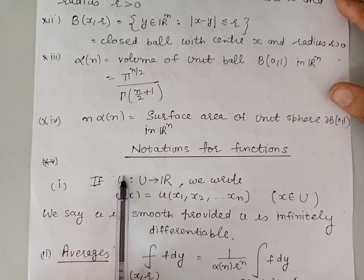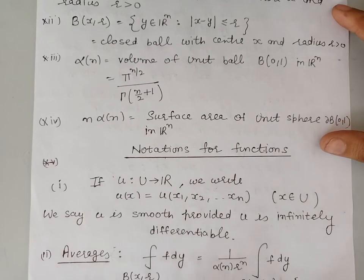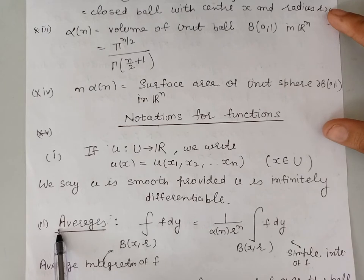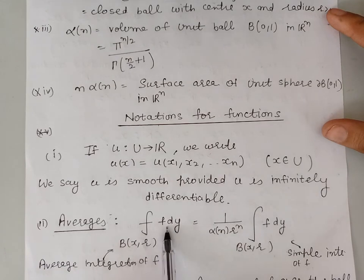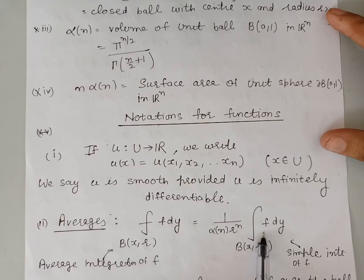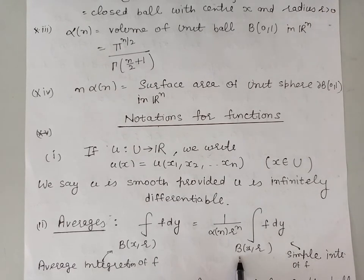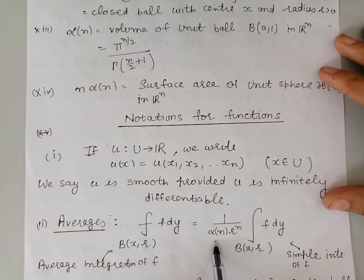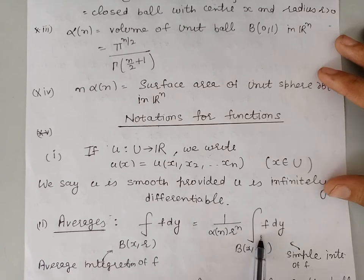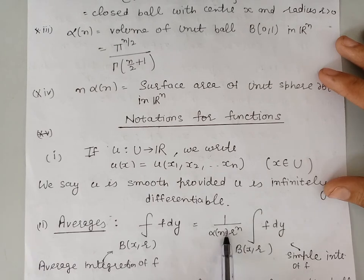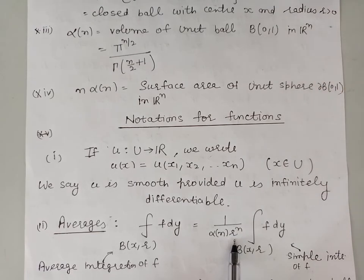Now we define an important notation for averages. The first notation is the average integration of a function f over the ball with center x and radius r. This is given by the simple integration of the function f over the ball with center x and radius r, divided by the volume of this ball. The volume of the ball is given by alpha_n times r to the power n. So this becomes: the average of f over the ball equals the simple integral of f over the ball multiplied by the reciprocal of alpha_n times r to the power n.